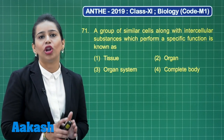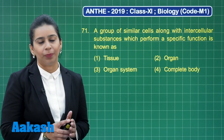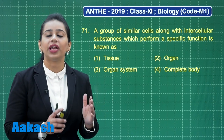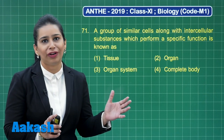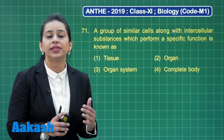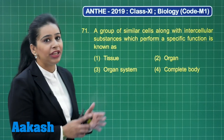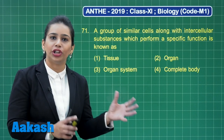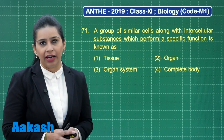Tissue first evolved in phylum Cnidaria during the course of evolution. Let's check out the other options: option two is organ — an organ is a group of tissues specialized to perform a particular function in our body. Organ system is when two or more organs are coordinated and integrated to perform a function in the body. And the complete body can be comprised of cells, tissues, organs, or organ systems in different groups of animals.